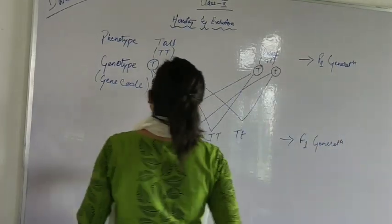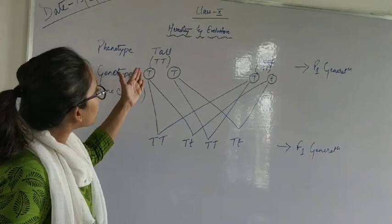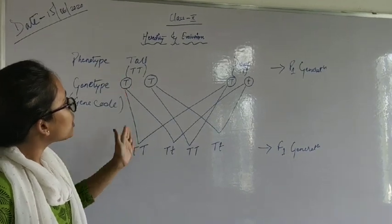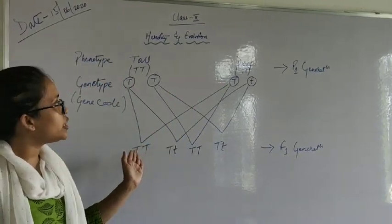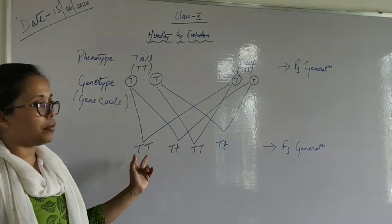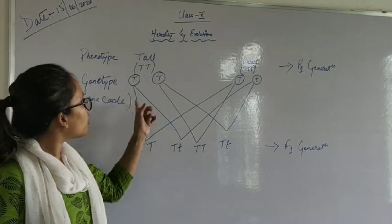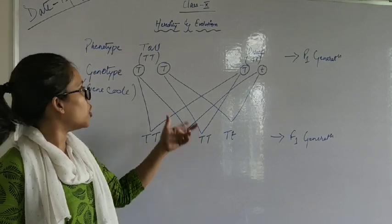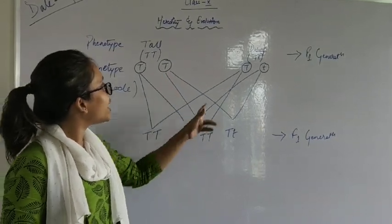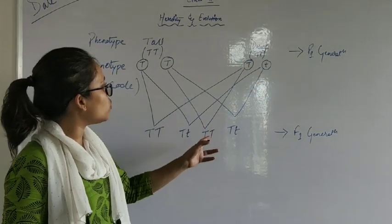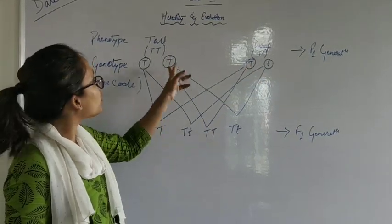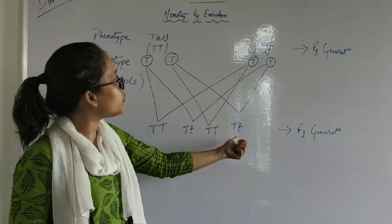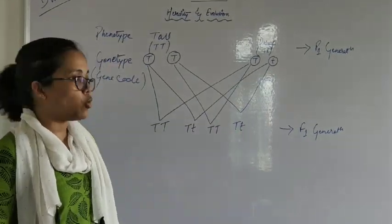So here we have taken one T from tall and one t from short plant. We have got two capital T. Here from first T, one; from second T, one—one capital T, one small t. Here from one parent capital T, and from the other side also capital T, then capital T capital T. From here the second T, and from there small t—capital T small t.